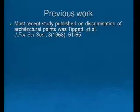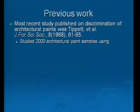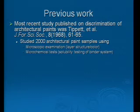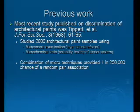Previous work was done 40 years ago now by Tippett. Now in human years we all know 40 is not old, but in terms of work you want to bring into court to justify the basis of what you're doing, we thought we could probably update that a bit. Tippett's work, however, did study 2,000 architectural paint samples, so it was quite a comprehensive study. Using microscopic and microchemical techniques, Tippett found that in these 2,000 samples he could provide a discrimination or chance of random association of one and a quarter million — quite good discrimination.